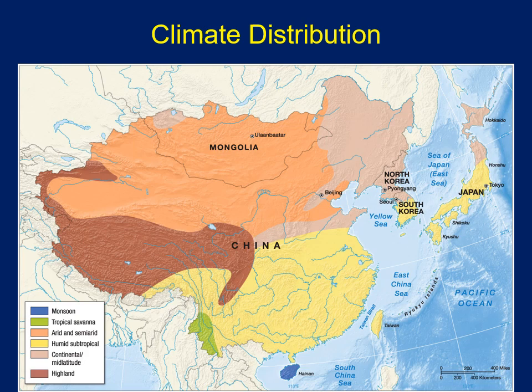Mongolia is primarily part of that arid region. The Tibetan Plateau is a very high area, which we'll discuss in more detail. In northern China and the Koreas, the climate is primarily continental mid-latitude — very hot summers and very cold winters, so a lot of temperature variation.